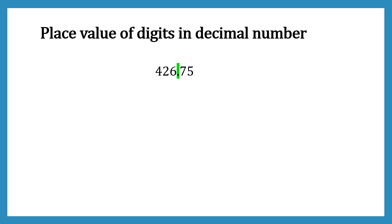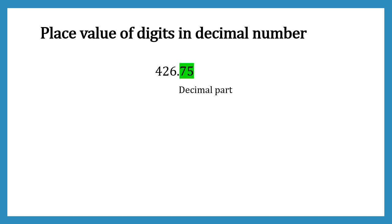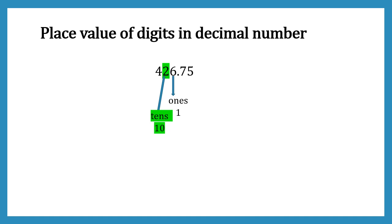If we look at our number closely, we know it has a decimal point. The left-hand side of the decimal point is known as the whole number part. Starting from the decimal point going left: the first digit is 6 and it has a place value of 1. The second digit is 2 and it has a place value of 10. The third digit is 4 and it has a place value of 100.